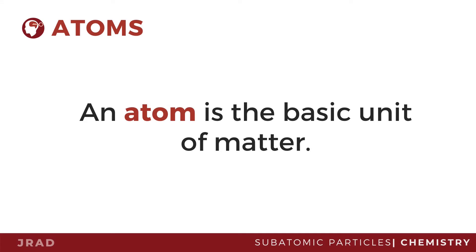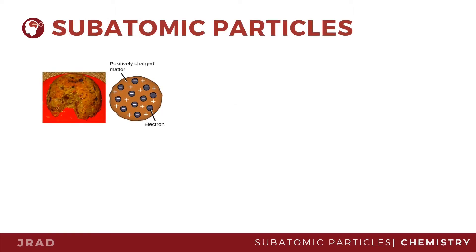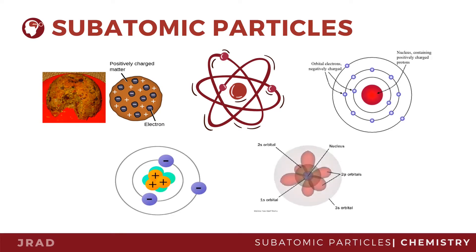Atom is the basic unit of matter. Its discovery started when philosophers became curious about the origin of matter. Modern scientists came up with different theories that describe the structure of an atom, and later on, some chemists became well-known because of their contributions in the study of atomic structure.